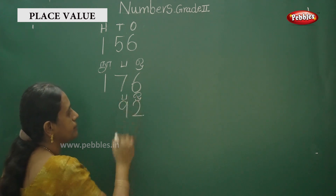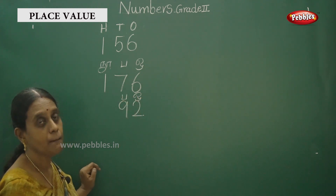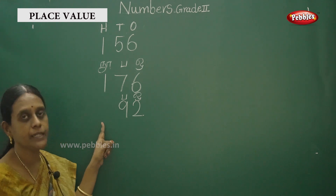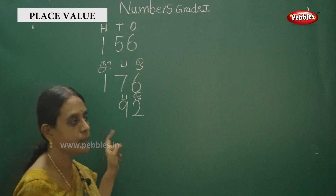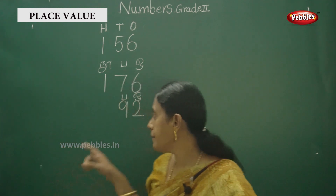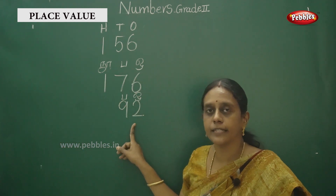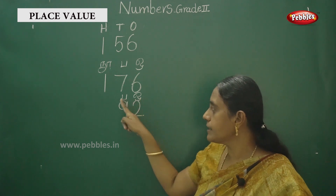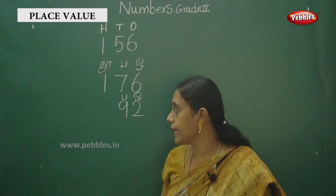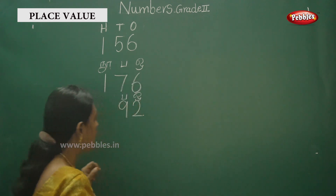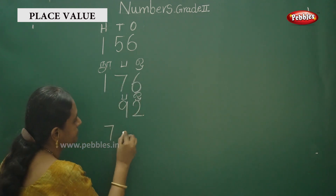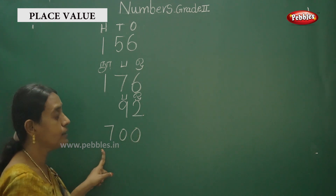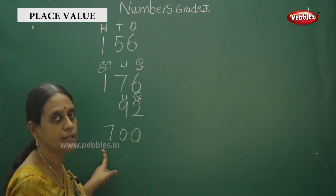1, 10, 100 — so 92 is a 2-digit number. 1 and 10. This number uses ones and tens — 10 and 100.